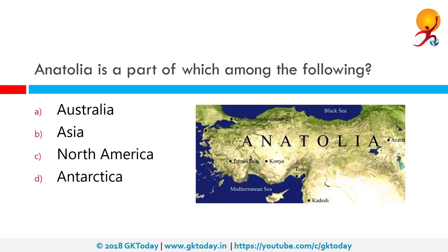Anatolia is a part of which among the following continents? The correct answer is Asia. Anatolia or Asia Minor constitutes the central part of Turkey. It is bounded by the Taurus Mountains in the south, the Black Sea in the north and the Aegean Sea in the west, while the eastern boundary is formed by Mount Ararat and the Armenian highlands. The national capital of Turkey, Ankara, is located in its central part.